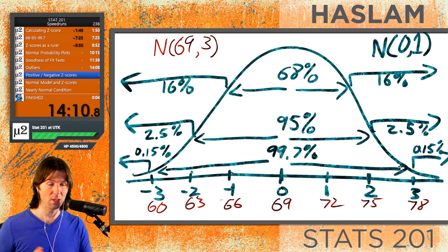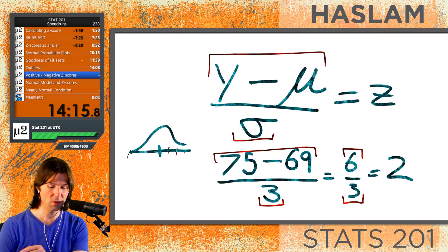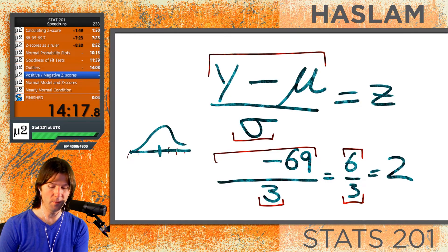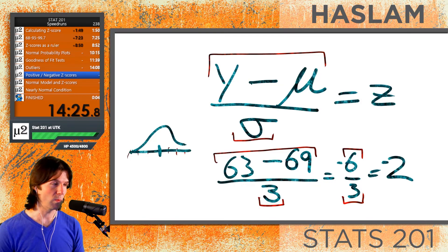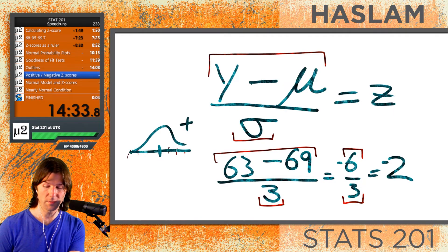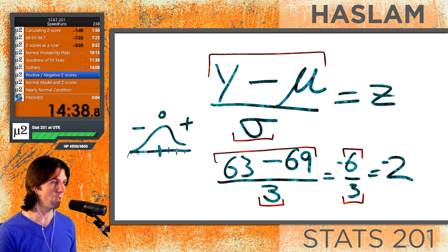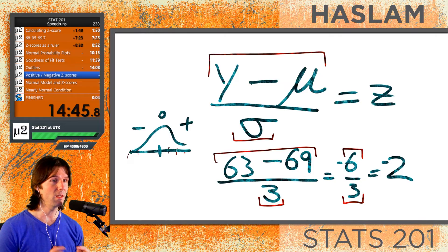When we get to positive and negative z-scores, if we change the height to 63 inches, we'd get a difference of negative 6 and a z-score of negative 2. Z-scores tell us if something is above or below the mean. A positive z-score means above the mean, a negative z-score means below the mean, and a z-score of 0 means right on the mean. The closer to 0, the closer to the mean.